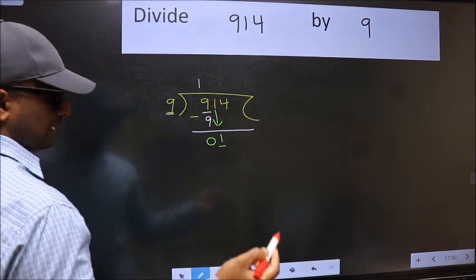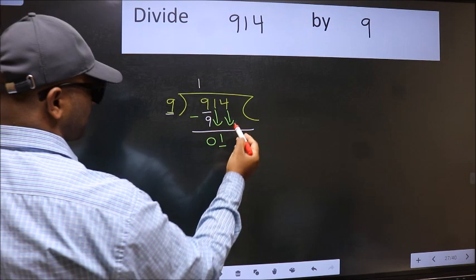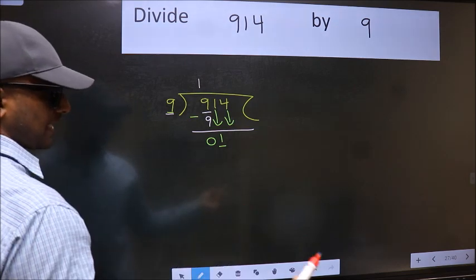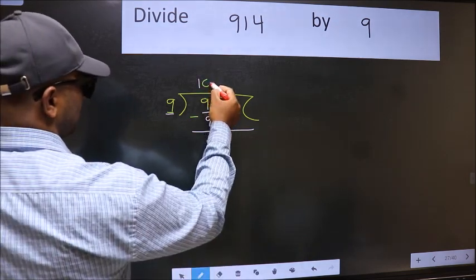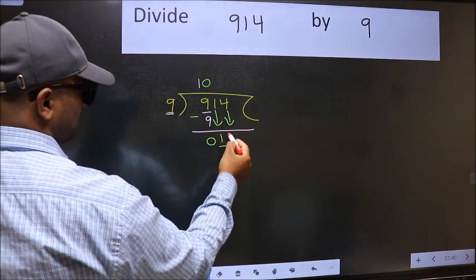So we should bring down the second number. And the rule to bring down second number is we should put 0 here. Then only we can bring this number down.